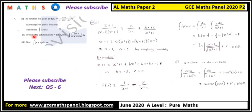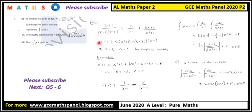Before that, using the substitution u equals sine x, find the integral of cosine x over (one plus sine squared x) dx. Using this substitution, if u equals sine x then du equals cosine x dx. I can see that cosine x dx appears in the numerator, so I replace cosine x dx with du. Since u equals sine x, sine squared x equals u squared, giving the integral of one over (one plus u squared) du.